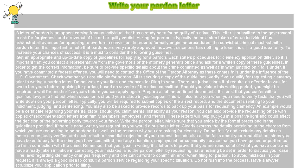You may also be asked to provide records to back up your basis for requesting clemency. An example would be a certificate regarding your mental state, should you claim mental instability as your reason. You can also provide the requesting office with copies of recommendation letters from family members, employers, and friends. These letters will help put you in a positive light and could affect the decision of the governing body towards your favor.